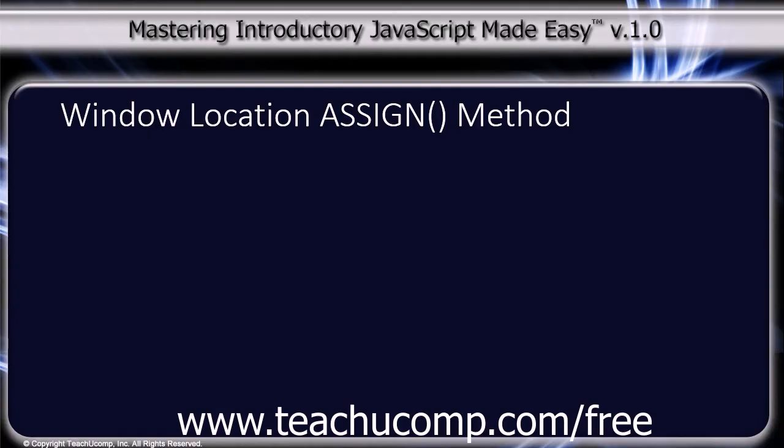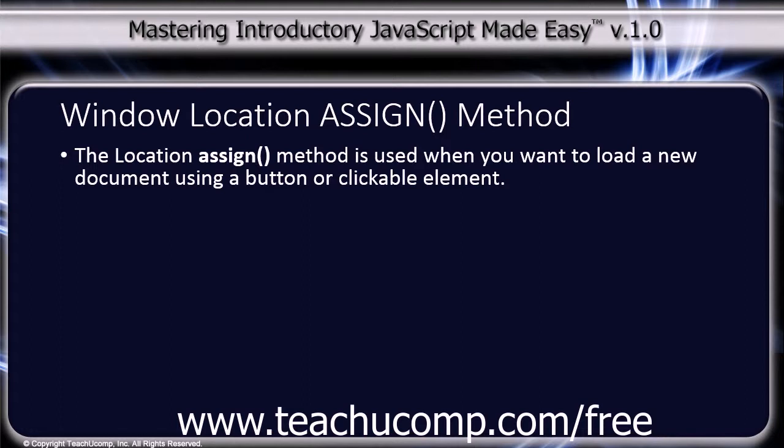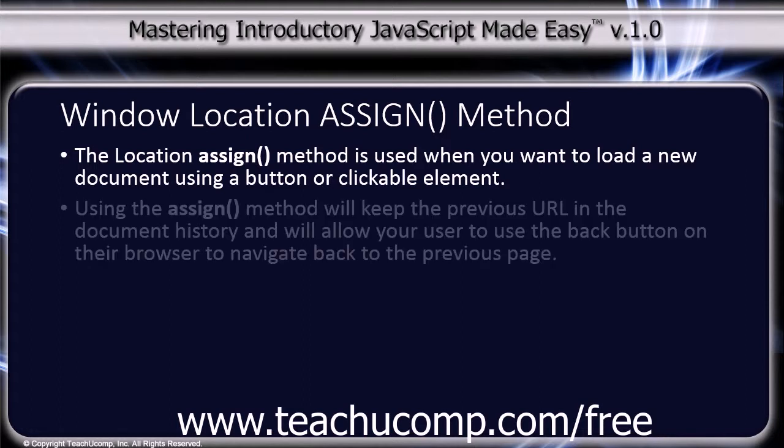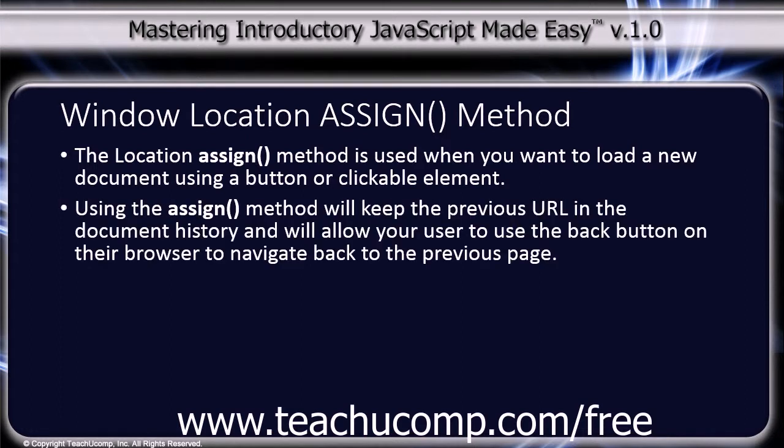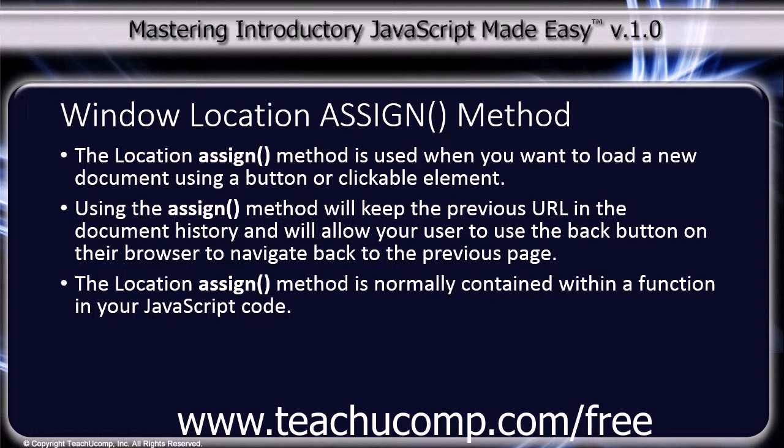The location assign method is used when you want to load a new document using a button or clickable element. Using the assign method will keep the previous URL in the document history and will allow your user to use the back button on their browser to navigate back to the previous page. The location assign method is normally contained within a function in your JavaScript code.